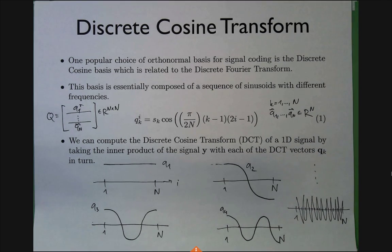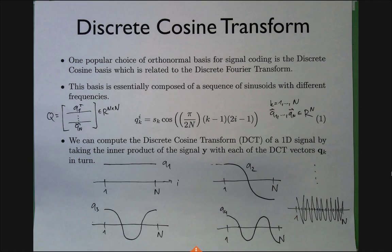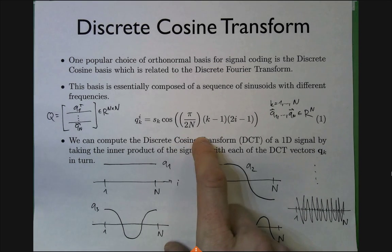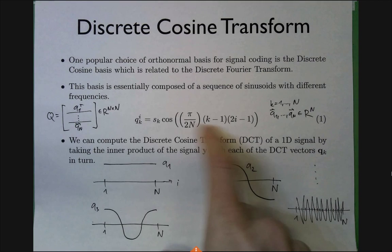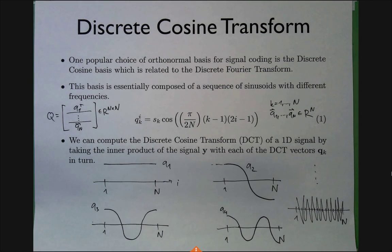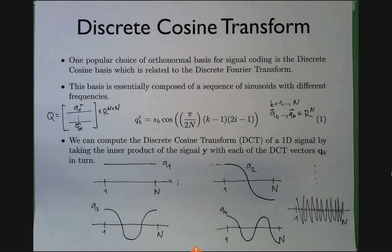There are even faster methods to compute the DCT — applying a matrix-vector product is not the most efficient approach. Things like the Fast Fourier Transform can compute it even faster, leveraging the special properties of the formula. But I won't go into all those details.